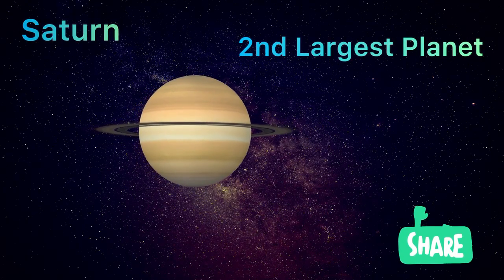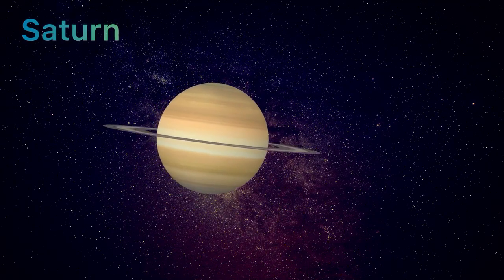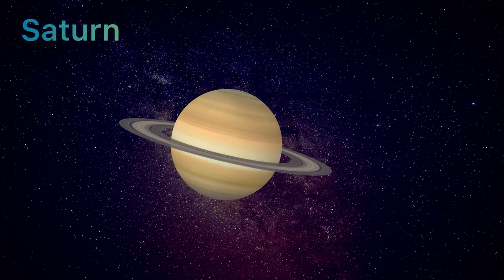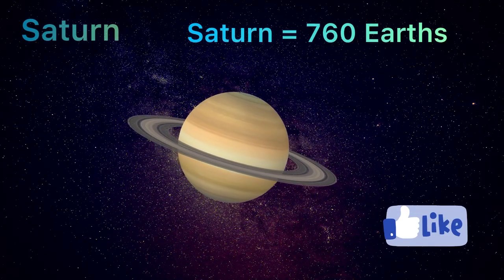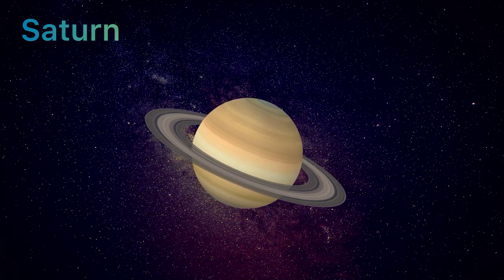Now let's talk about how big Saturn is. Saturn is the second largest planet in our solar system. It's really giant. Guess what? More than 760 Earths could fit inside Saturn. That's huge!